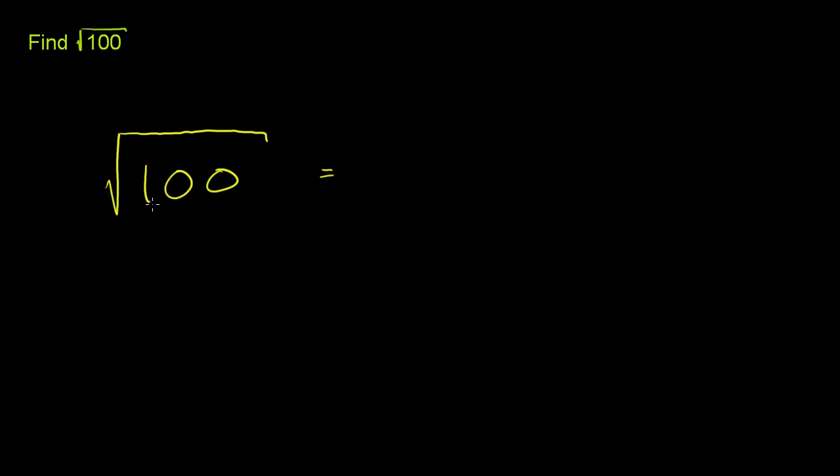So let's think about what this is saying. This is asking us to find the number, the positive number, that when I multiply that number by itself, I get 100. So what number, when I multiply by itself, do I get 100?